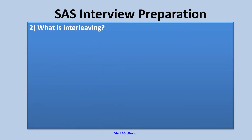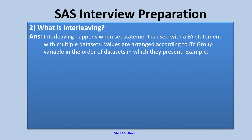What is interleaving? Interleaving is the mixing of observations, or sandwiching the observations, while combining datasets into the final output data. Interleaving happens when the set statement is used with a by statement with multiple datasets. Values are arranged according to the by-group variable in the order of the datasets in which they are present.